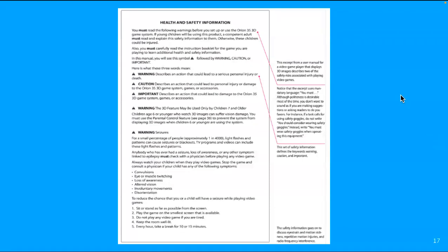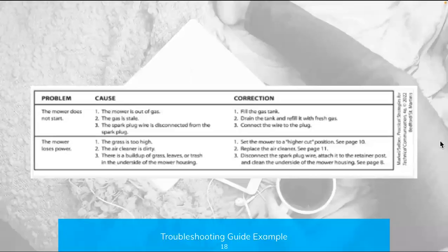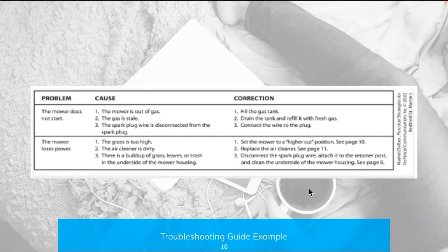Here's another example of health and safety information — reading through these annotations would be a good idea. You can see this one uses signal words and the word 'important' with various uses. Finally, here's a troubleshooting guide example for a mower: here's the problem, here's what might be the cause, and here's what you should do to address each of those causes and hopefully get your mower working again.